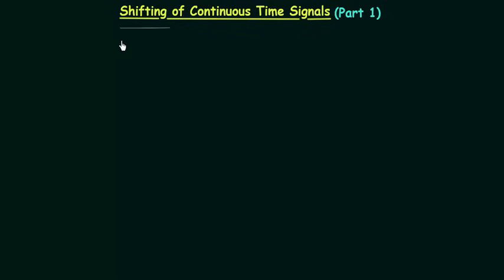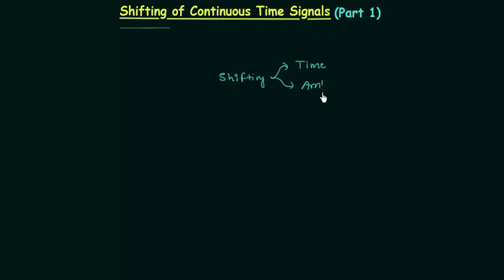Shifting is of two types. The first one is time shifting and the second one is amplitude shifting. In this lecture I will explain time shifting and in the next lecture we will deal with amplitude shifting.